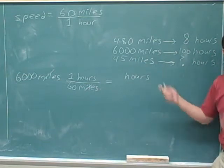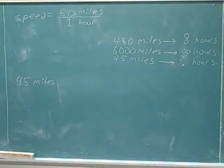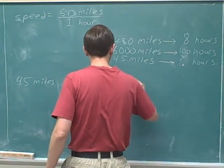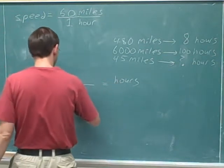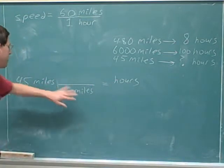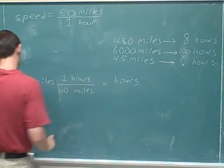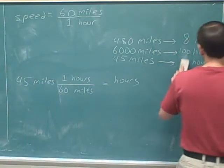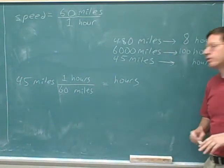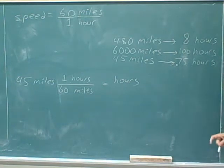How many hours would it take to go 45 miles? Give that a shot. The units we were given are 45 miles. Our target units are hours. We're going to use a ratio unit to convert from our starting units to our target units. We need miles down here to cancel the miles up here, and that means hours go on top. The number 60 goes with miles on the bottom. Now we have 45 divided by 60, which comes out to be 3 quarters of an hour — 0.75 hours.